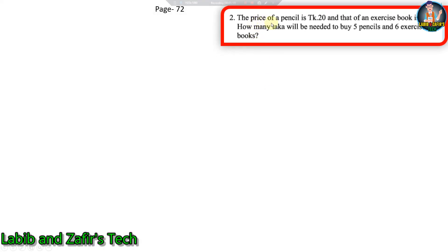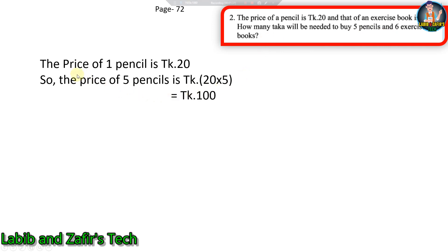The price of a pencil is taka 20 and that of an exercise book is taka 25. How many taka will be needed to buy five pencils and six exercise books? The price of one pencil is taka 20, so the price of five pencils is taka 20 into 5 equal to taka 100.